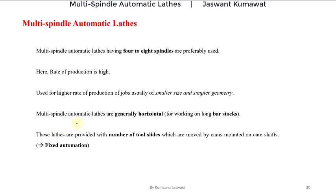Multi spindle automatic lathes may be vertical or horizontal, but the generally used type is horizontal. These are used for working on long bar stocks.